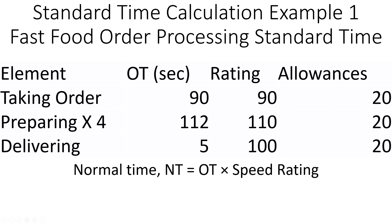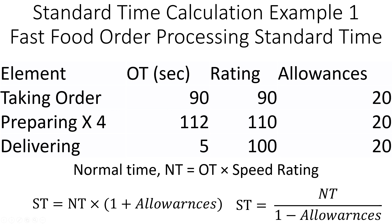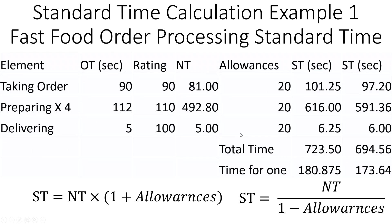You can see this formula to calculate the normal time, and also the standard time calculation formula. You can use either one — if it doesn't specify, it's better to use the second one: NT divided by (1 minus allowances). We are using about 20% allowances. After doing all these calculations, the total time comes to about 723 seconds using one formula.